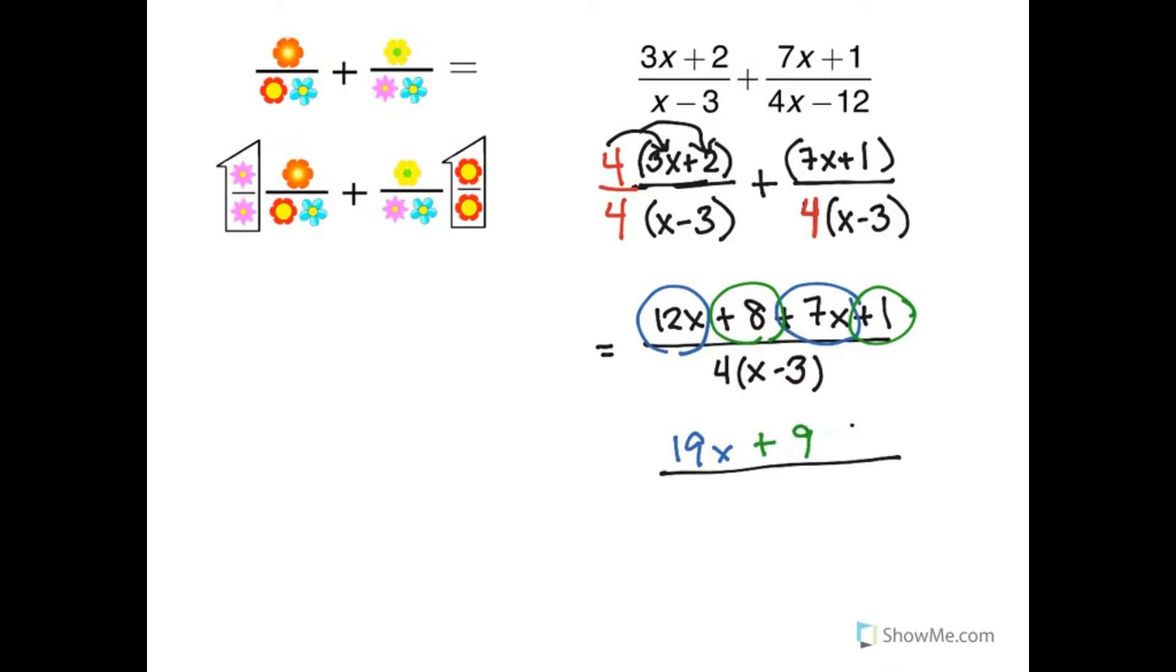Now that can't be factored, so the bottom 4 times x minus 3, there's nothing I can cancel with the top.